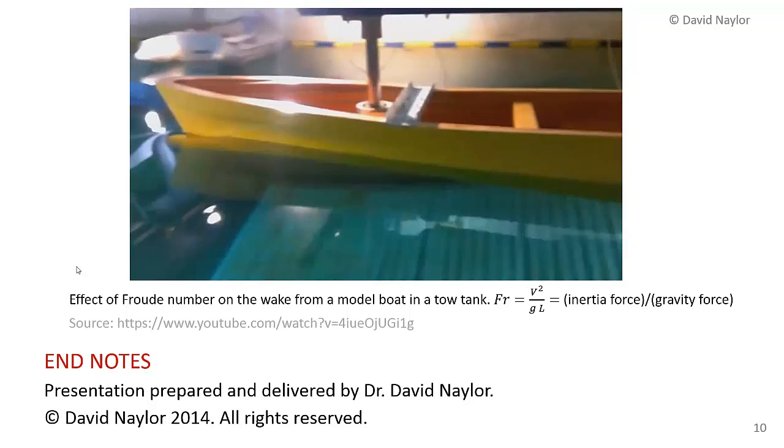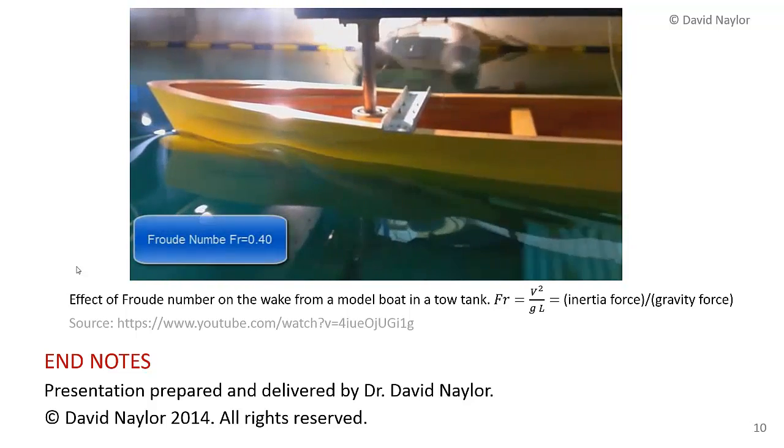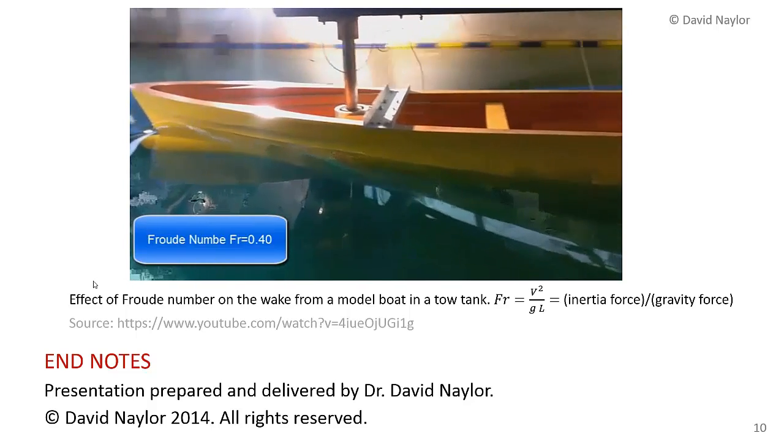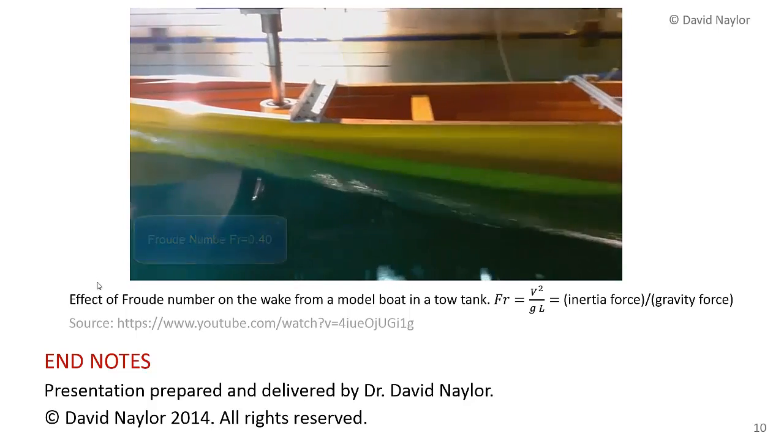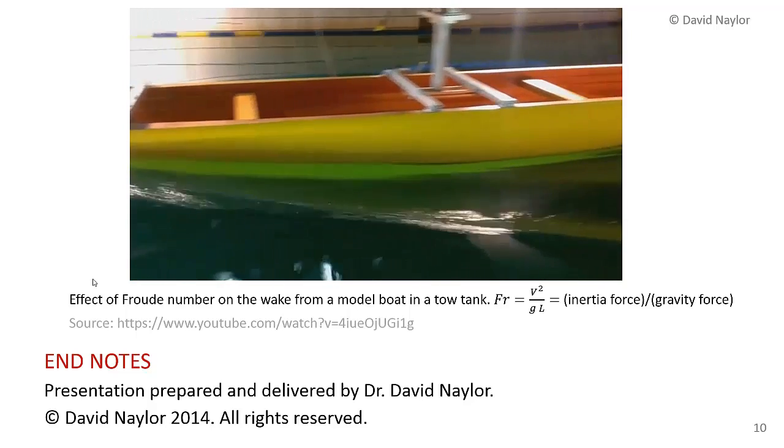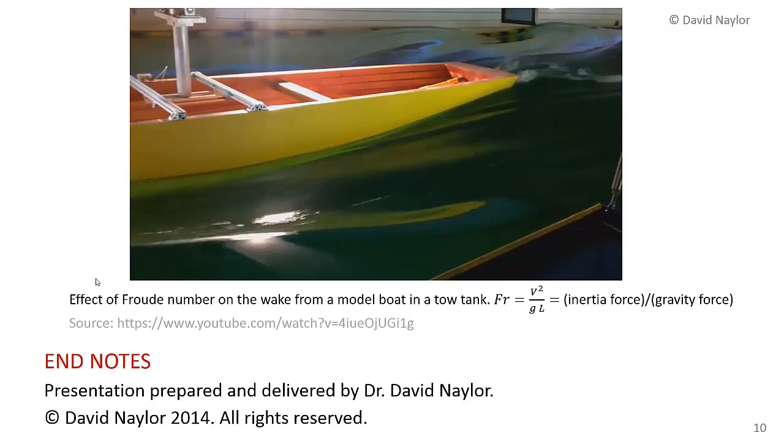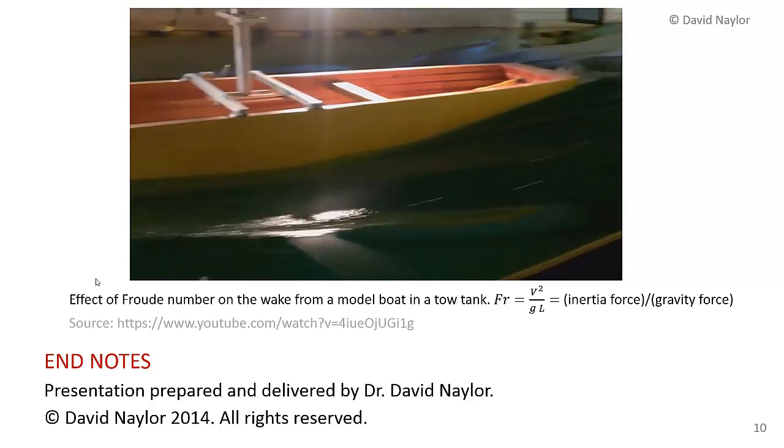Then it cuts to another test done at a substantially higher Froude number, about three times higher. You can see it's a much bigger wave, much more turbulent, and will cause much more drag on the ship. These tests would be done at the same Froude number as the full-scale boat and could be used to predict the wave drag on the boat. That completes this video.